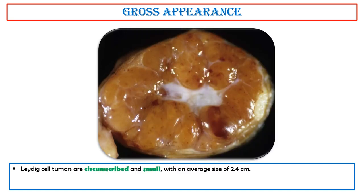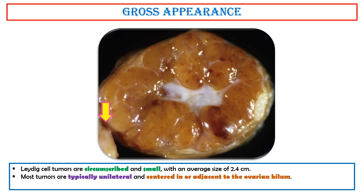Gross appearance. Leydig cell tumors are circumscribed and small, with an average size of 2.4 cm. Most tumors are typically unilateral and centered in or adjacent to the ovarian Hila. They have a solid and soft yellow-tan or red-brown cut surface.